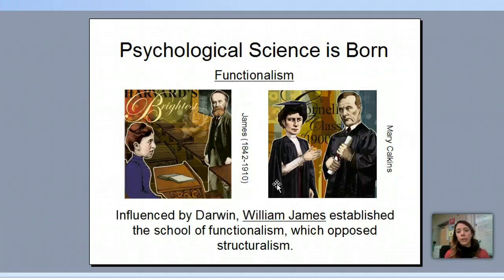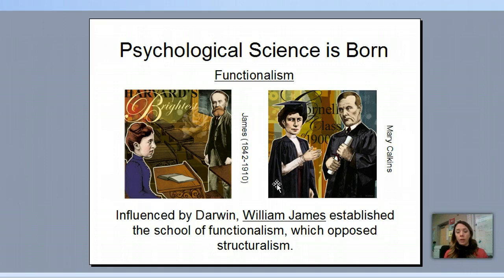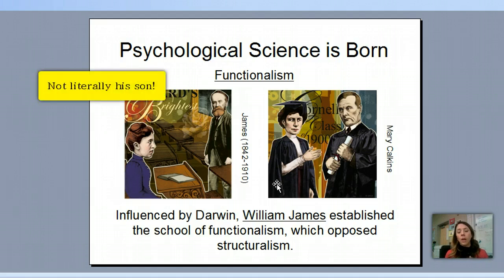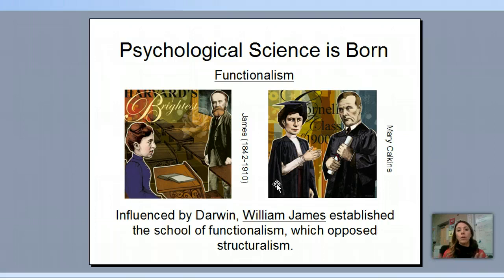His protégé was William James — the first psychologist in America. Think of Jamestown to remember that James was in America. He studied from Wundt but rejected Wundt's structuralism in favor of functionalism. Functionalism says it doesn't matter how the mind and body are structured — it matters how they function within the environment. You can think of functionalism as how a person functions within their environment, while structuralism looks at how they're actually put together.